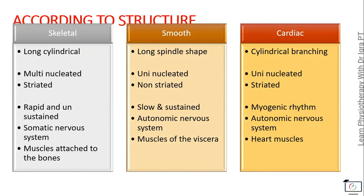According to the shape, the skeletal muscles are long and cylindrical, while the smooth muscles are long and spindle-shaped, while the cardiac muscles are cylindrical and branching.